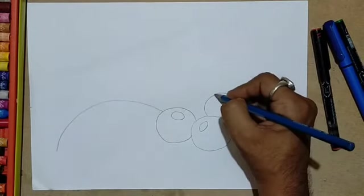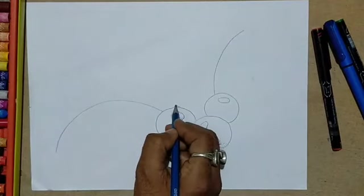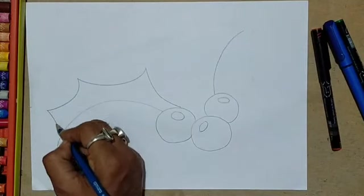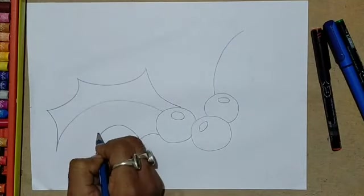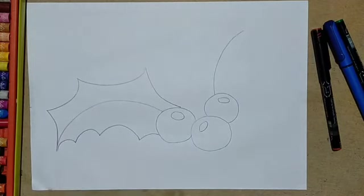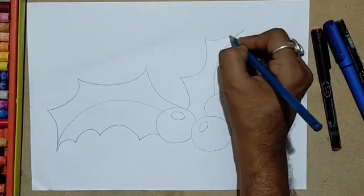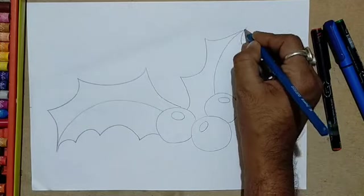And a curved line for the leaf. Okay, and this is the right hand side leaf.